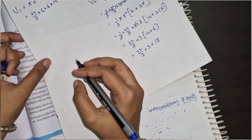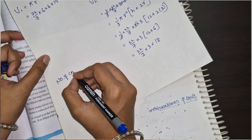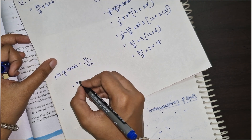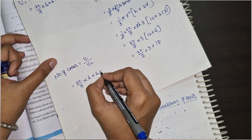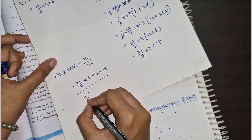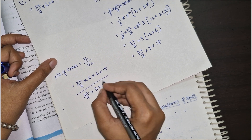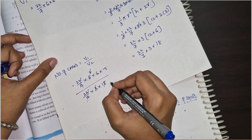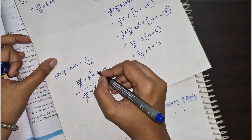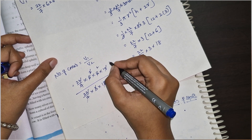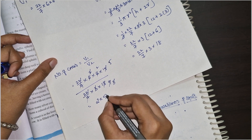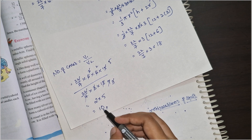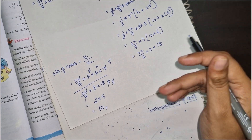Number of cones equals V1 by V2. V1 is 22 by 7 × 6 × 6 × 15, and V2 is 22 by 7 × 3 × 18. The 22 by 7 cancels. Simplifying: number of cones equals 10. So 10 cones can be filled with ice cream.